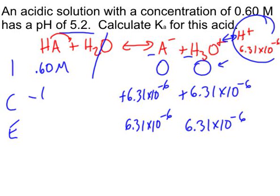So how much did the HA drop? Well, 6.31 times 10 to the minus 6. And if you actually go and try to calculate this, 0.6 minus 6.31 times 10 to the minus 6, you're going to see that the number really doesn't change at all. In fact, it changes so little that I'm just going to leave it as is. And this is, remember, the assumption we made in the earlier problems, that this was so small that when you subtracted it, it didn't make a difference. So now we have our equilibrium concentrations.